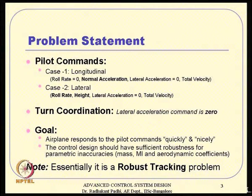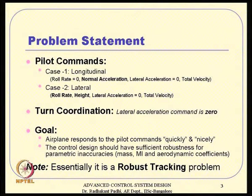The objective is that the airplane should respond to pilot commands both quickly and nicely. The second objective is that the control design should have sufficient robustness for parametric inaccuracies — we can never precisely predict total mass, moment of inertia, or aerodynamic coefficients. Even with such uncertainties, the control design should remain robust. This is essentially a robust tracking problem.